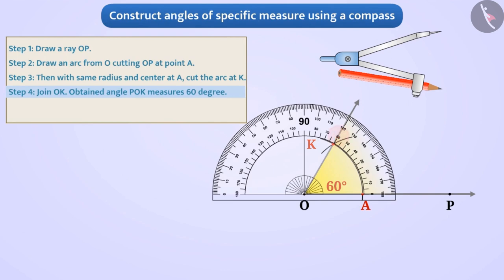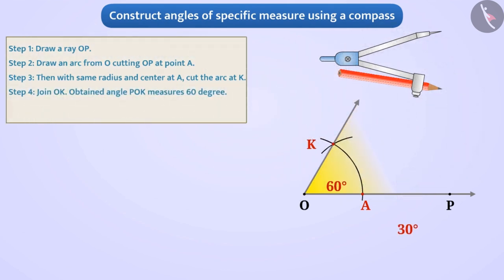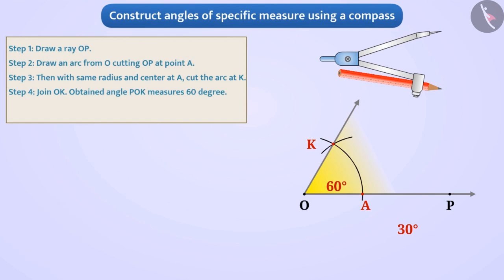We can verify this using the protractor. Can you draw an angle of 30 degrees with this method? We can bisect an angle of 60 degrees to make an angle of 30 degrees.